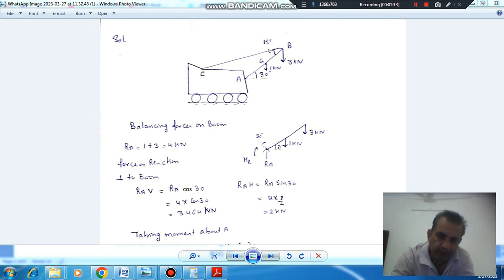And suppose MR is the reactive moment at A because this is fixed. So MR we are considering as reactive moment. So balancing the vertical forces, RA will be 1 plus 2, that is 4 kN. So this RA will be vertical and it can be resolved into two components, one along the boom and other perpendicular to the boom.